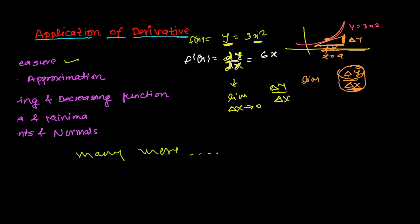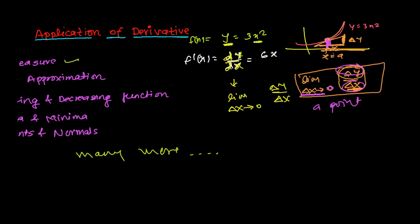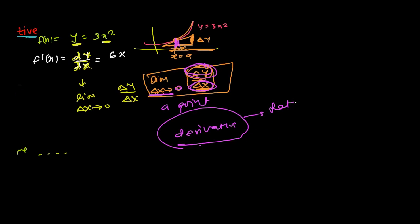When we take the limit as delta x tends to zero, that difference gets shorter and shorter — smaller and smaller — until finally we're at a single point. At that particular point, the rate of change of y with respect to x is what the derivative gives us. So simply put, the derivative is actually the rate of change of the function.